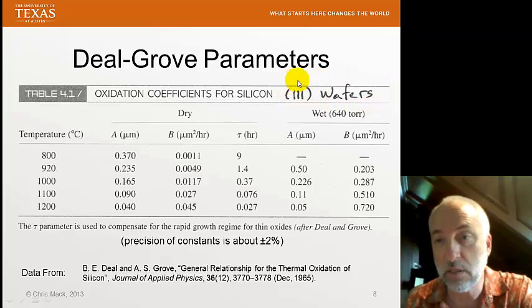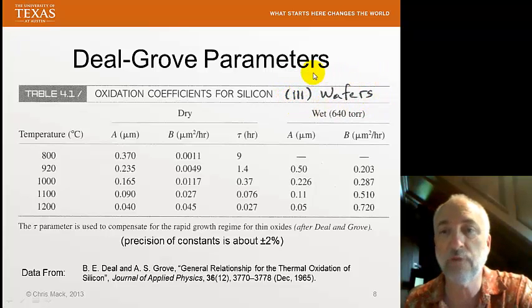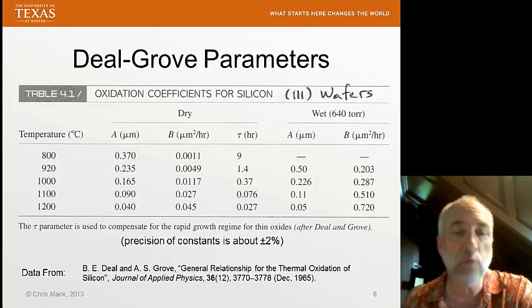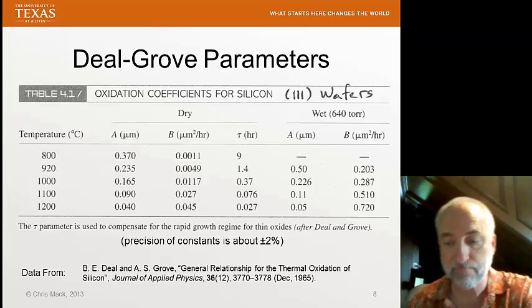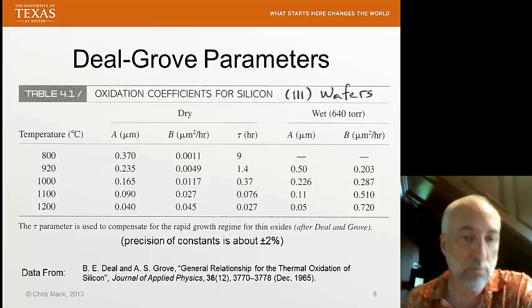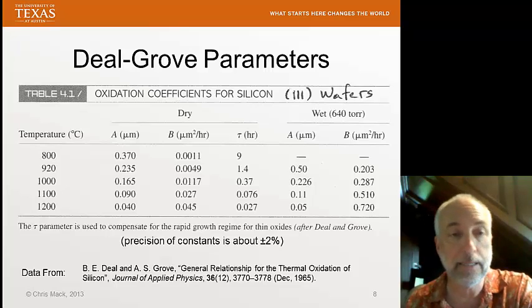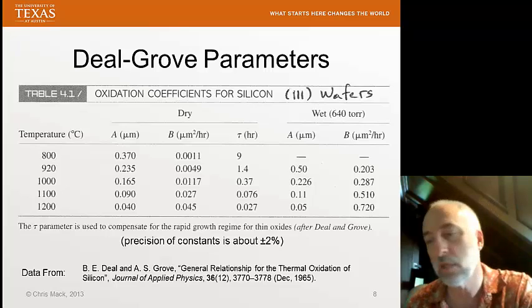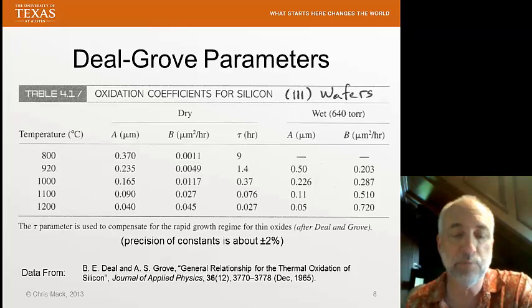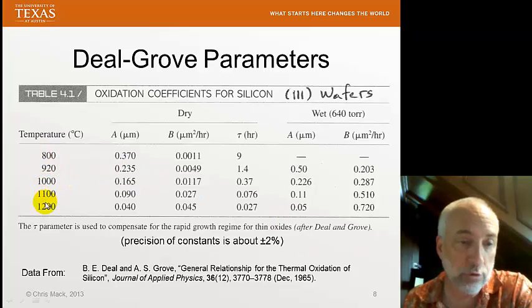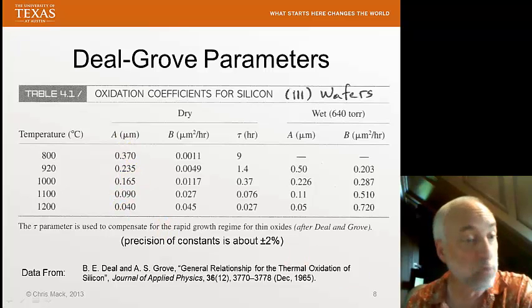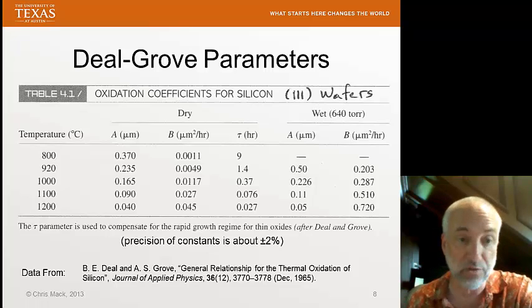All of this data is for 111 wafers. We'll find out shortly that changing the crystallographic orientation changes the oxidation rate, and we'll have to correct these parameters for wafers that are not 111. Given a set of Deal-Grove parameters at different temperatures, we can predict oxide thickness for a given oxidation time. If we need to interpolate between temperatures, we do so on a log scale versus 1 over temperature, assuming Arrhenius behavior.